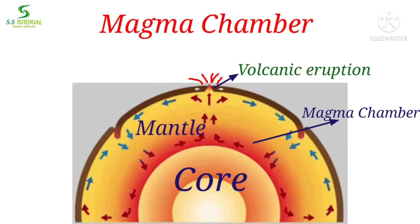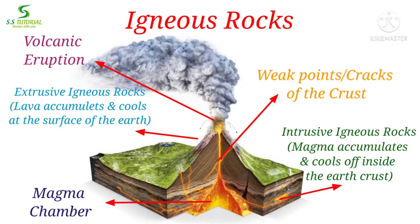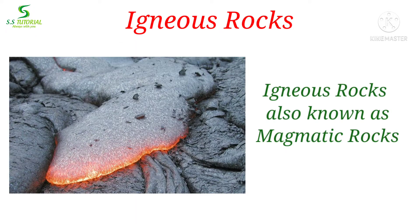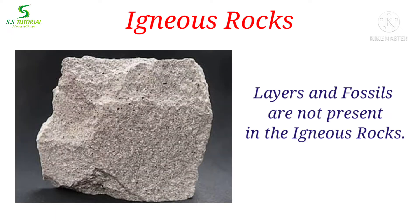From where magma comes out in the earth's surface. When magma comes out in the surface of the earth through weak points or cracks of the crust, or magma accumulates inside the cracks of the crust, then over time it slowly cools, crystallizes and solidifies, and forms rocks. Then it is called as igneous rocks. They are also called as magmatic rocks, as they are made up of magma.